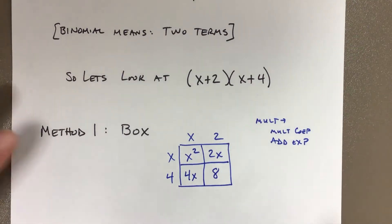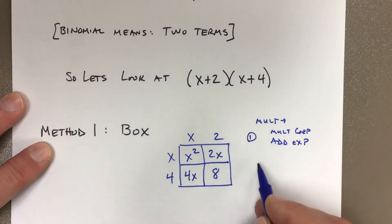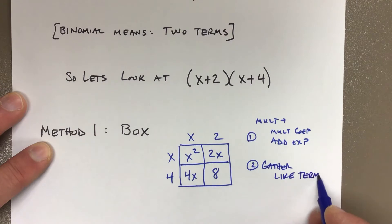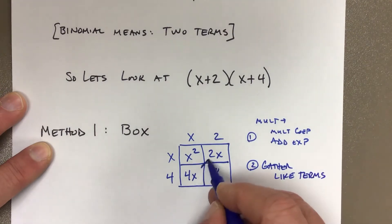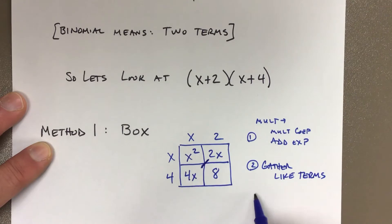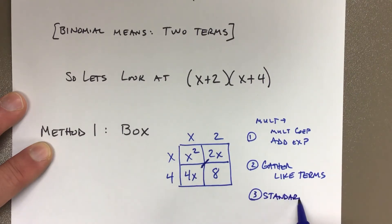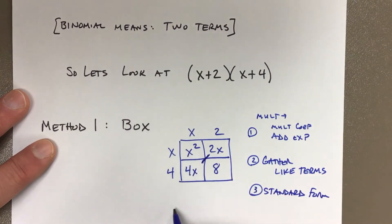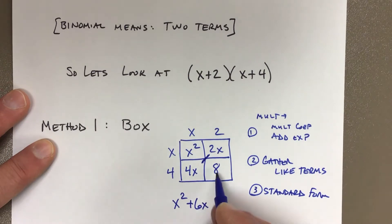Now you have to gather like terms — the like terms are along the diagonal. Write it in standard form, which means highest exponent first and go down from there. So x squared is your first term. Then 4 plus 2 gives you 6x. And then plus 8. There's your answer.